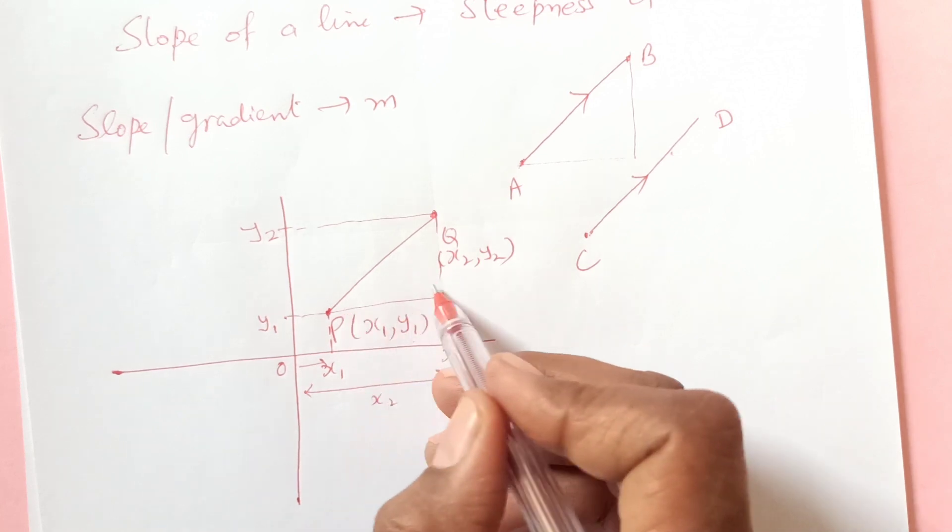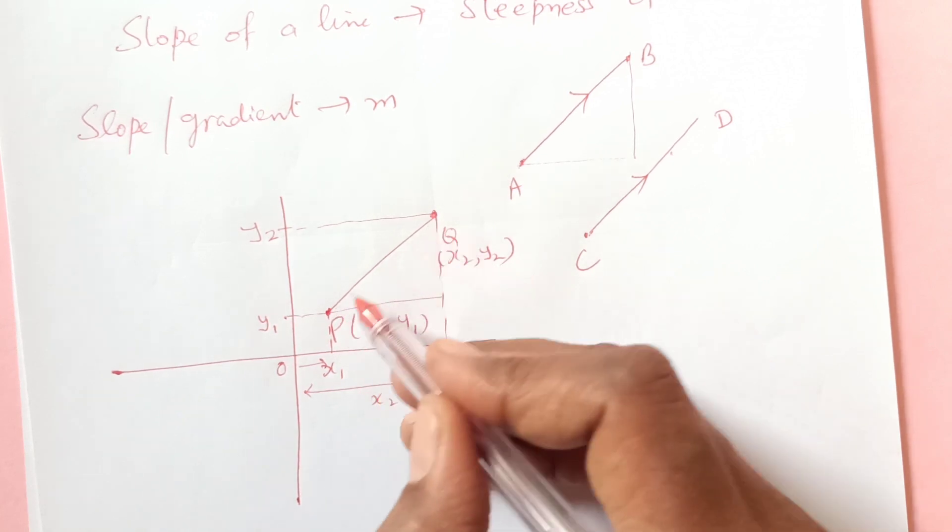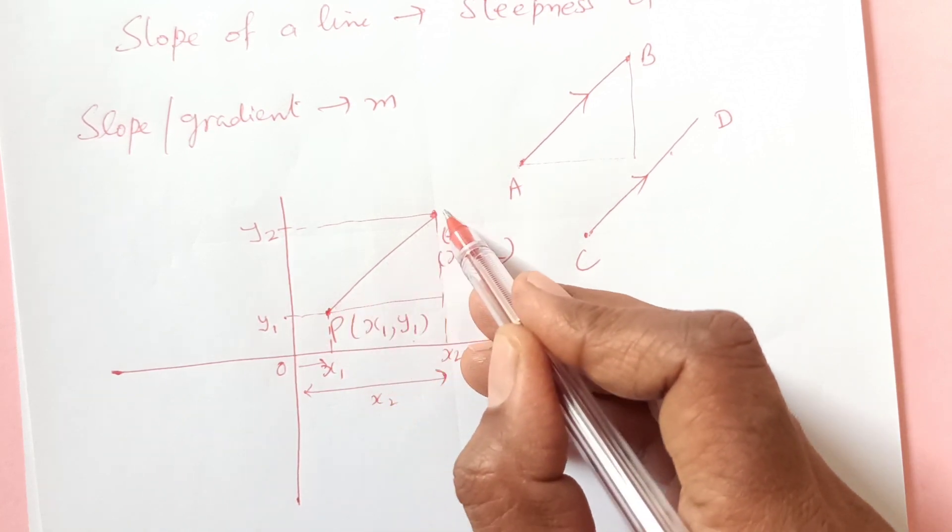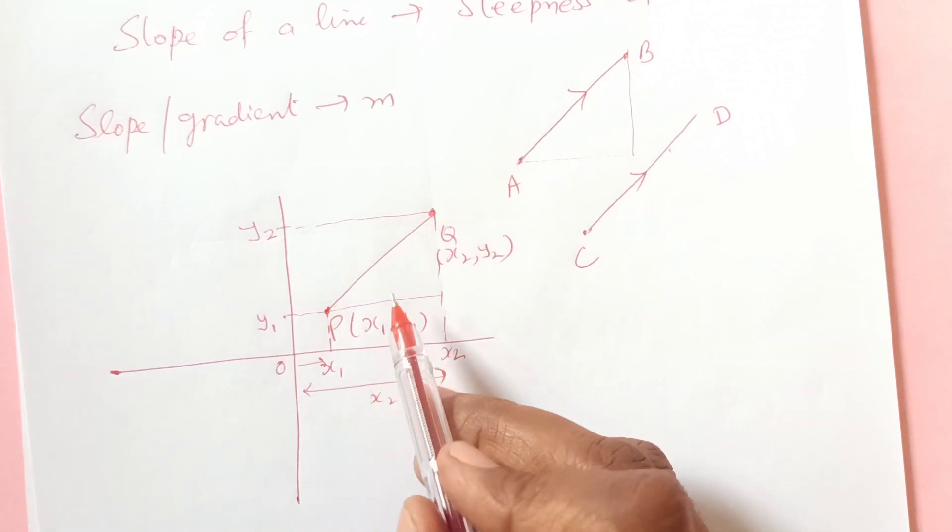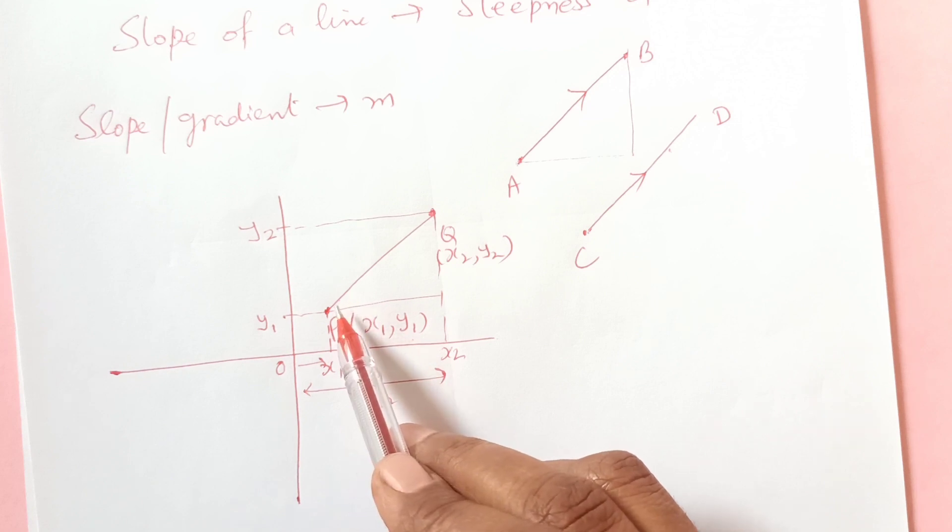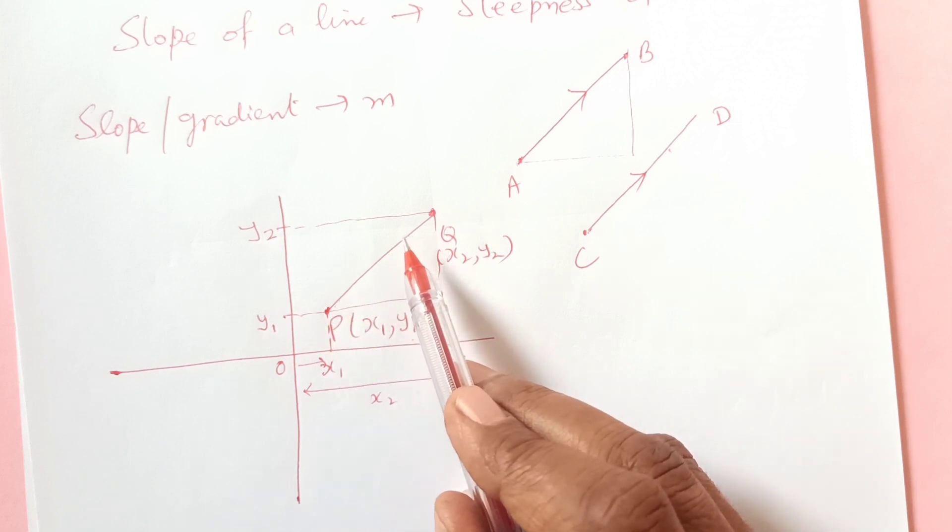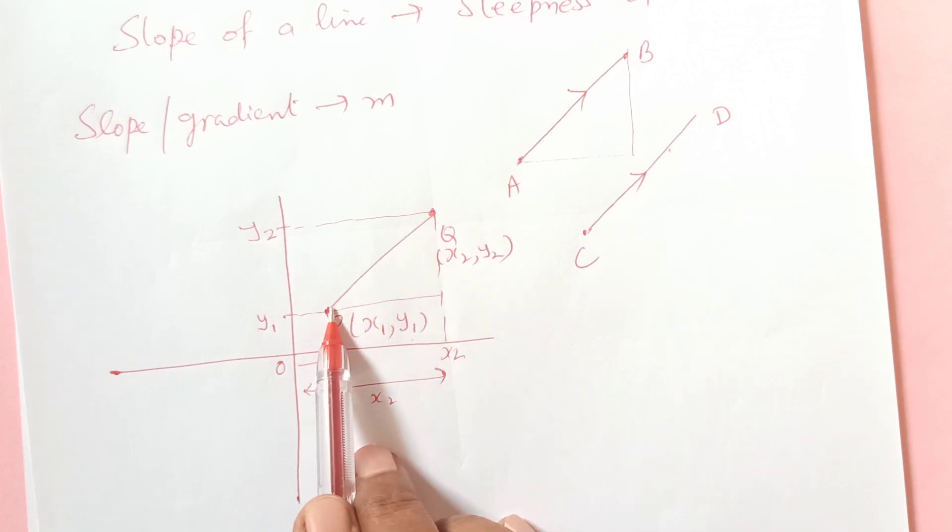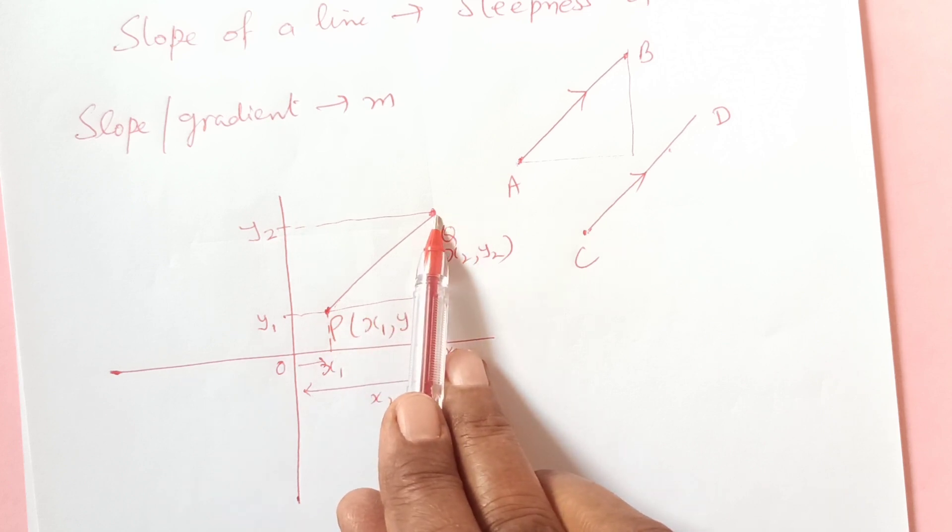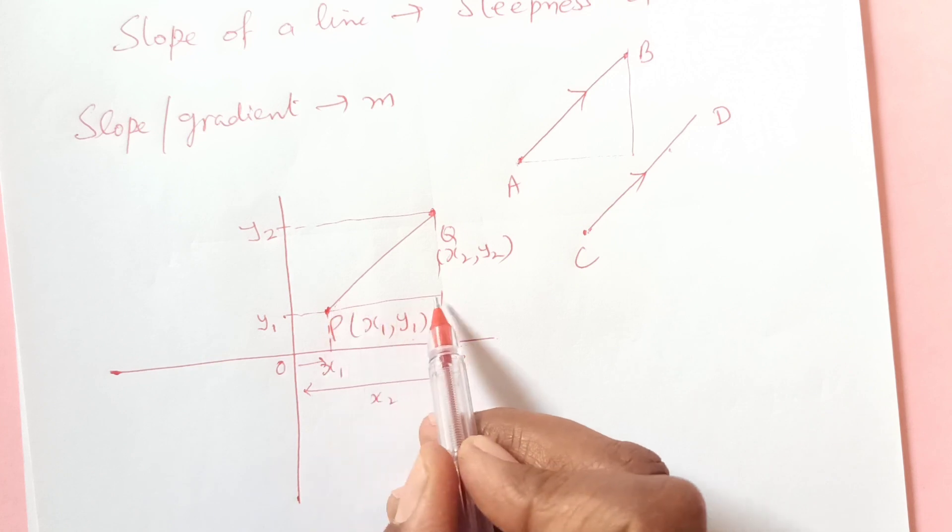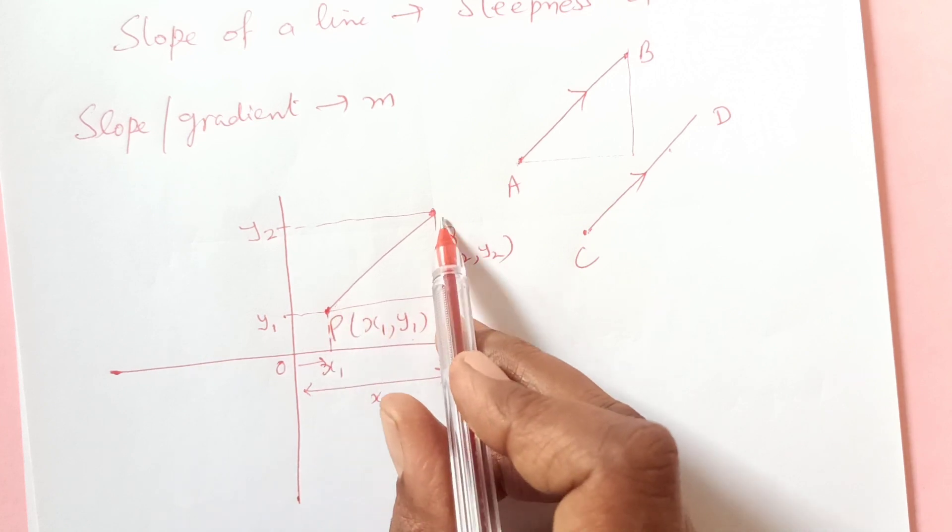So now if we see this is the slope, the steepness of the line. So when you find it out, actually what is happening is the steepness of the line gives how much is moved towards the right hand side and towards the y axis, meaning there is a change in x and change in y.